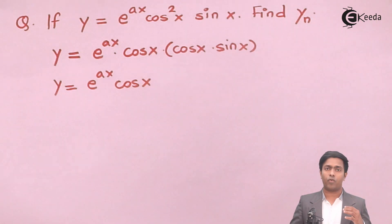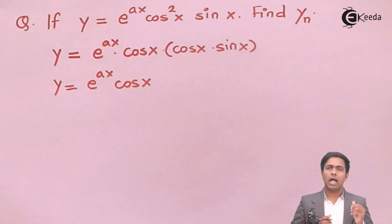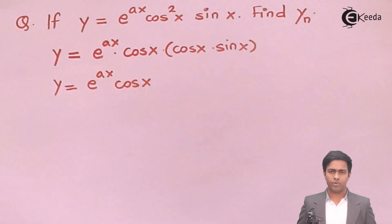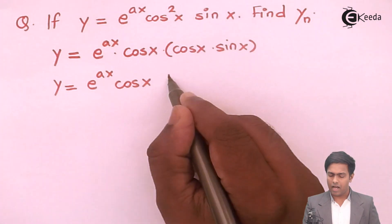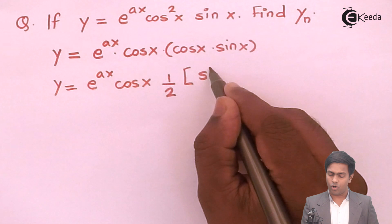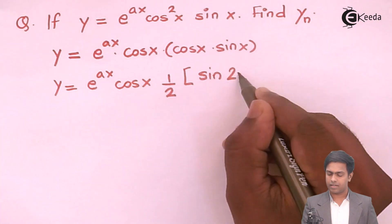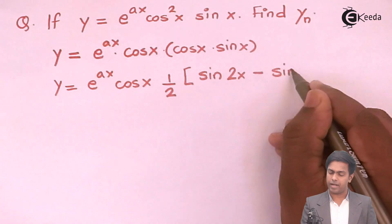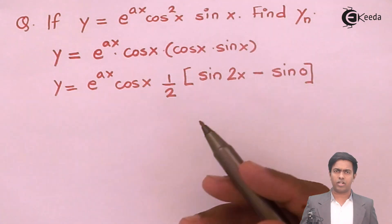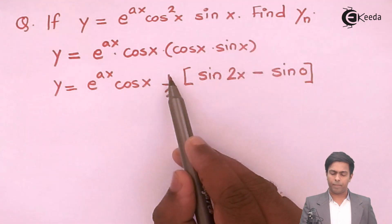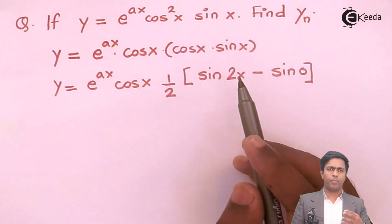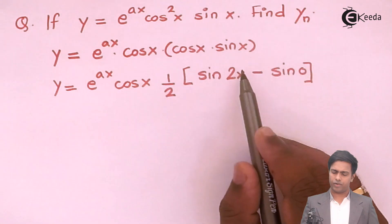Applying the defactorization formula: cos x · sin x = ½(sin(x+x) − sin(x−x)) = ½(sin 2x − sin 0). Since sin 0 = 0, that term is neglected. Alternatively, multiply and divide by 2: 2 sin x cos x = sin 2x. Either way, we get y = ½ e^(ax) · cos x · sin 2x.